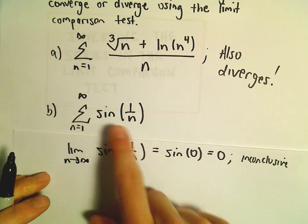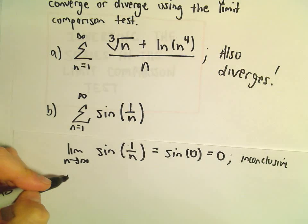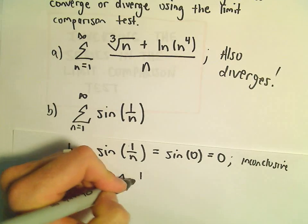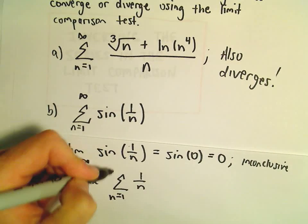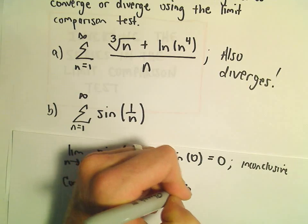Well, I see this series, or I see this 1 over n. So maybe we can compare it to 1 over n and see what happens. And recall, this is the harmonic series, again, a divergent p-series.